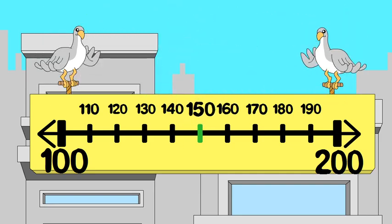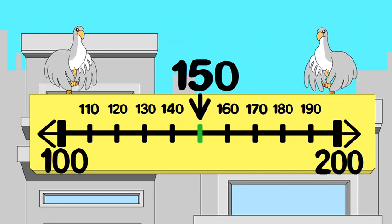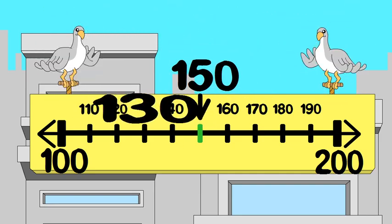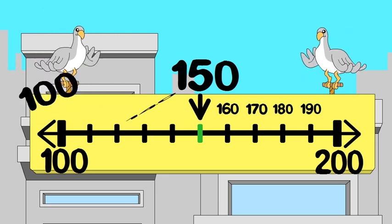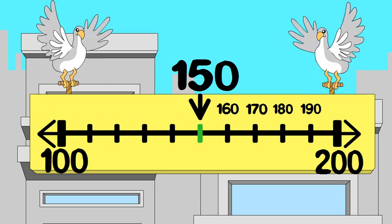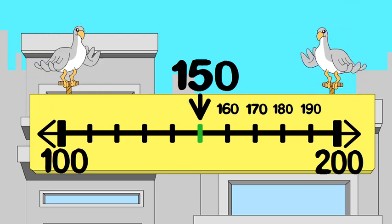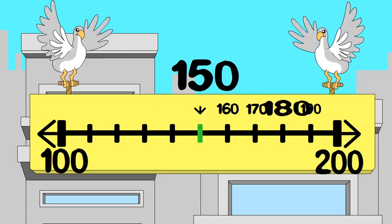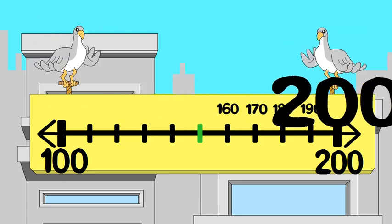If the number you want to round is less than the midpoint, round down. If the number you are rounding is at the midpoint or greater than the midpoint, round up.